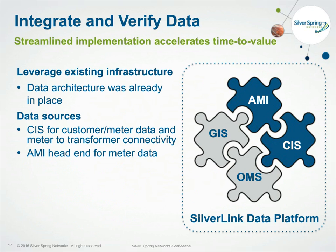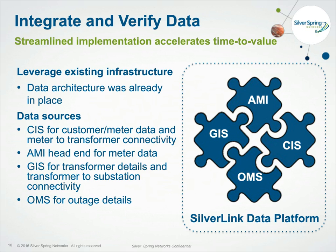We were fortunate that having data in one place — as Charles described — meant we didn't need to reinvent the wheel. We already had AMI and CIS data flowing into the analytics platform in support of the AMI project for AMI Ops, RevPro, and other users. The beauty of the system is we just needed a little more data to drive it, and we could load it right in. The addition of GIS data gave us more connectivity from the transformer up to the substation. Outage data supported one of the most effective methods we implemented.